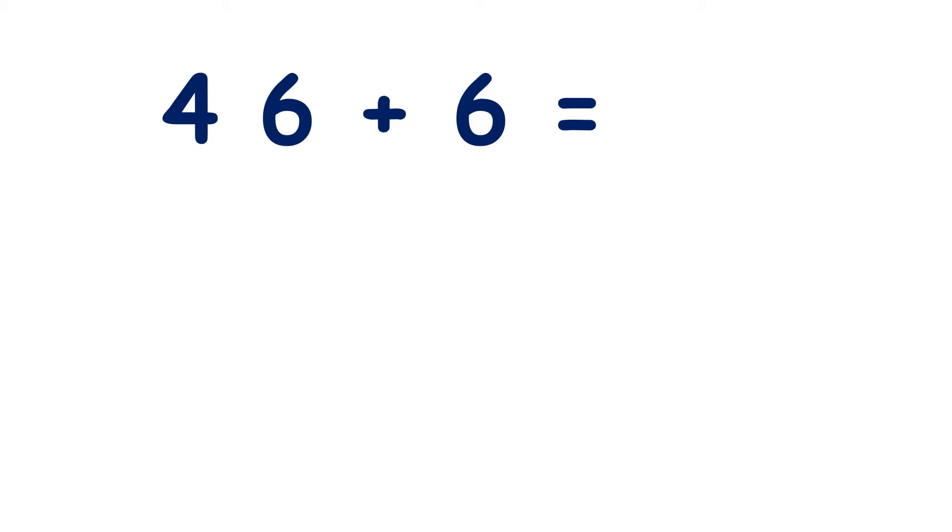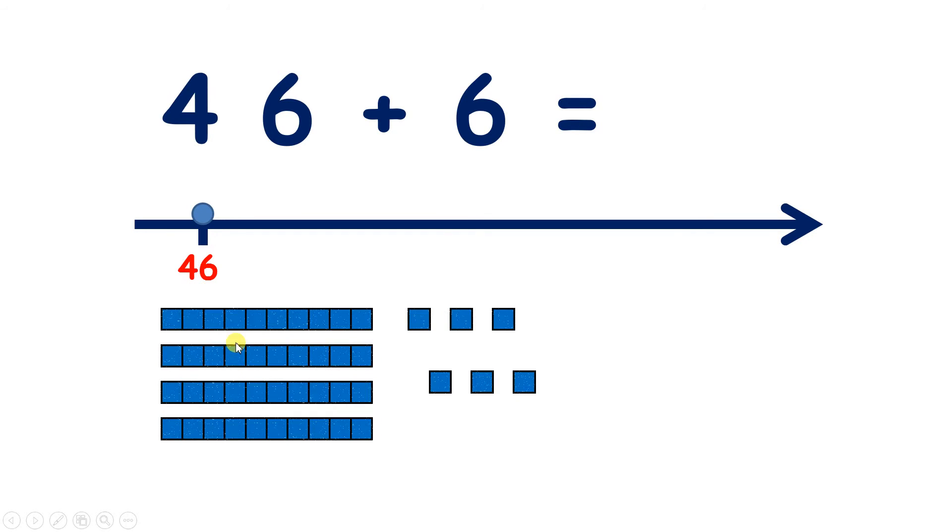Now 46 add 6. So we start with 46 on our number line. And we have 46, so that's 4 tens, 6 units. Adding 1 means we now have 7 units, so that's 47.